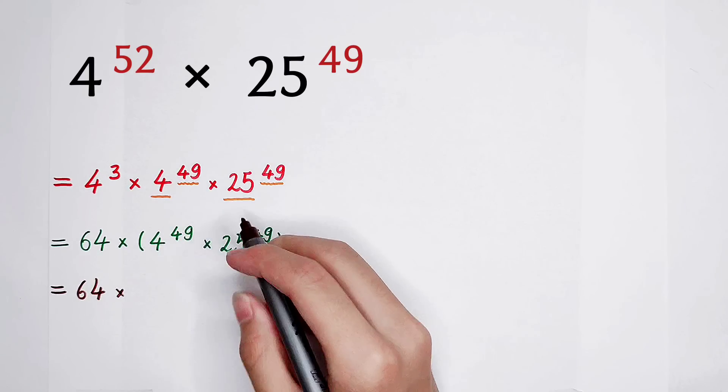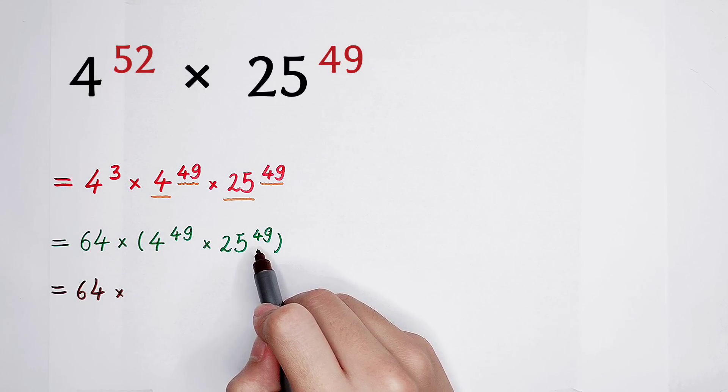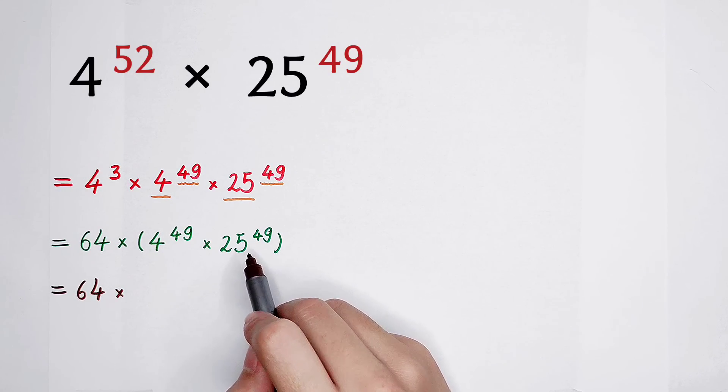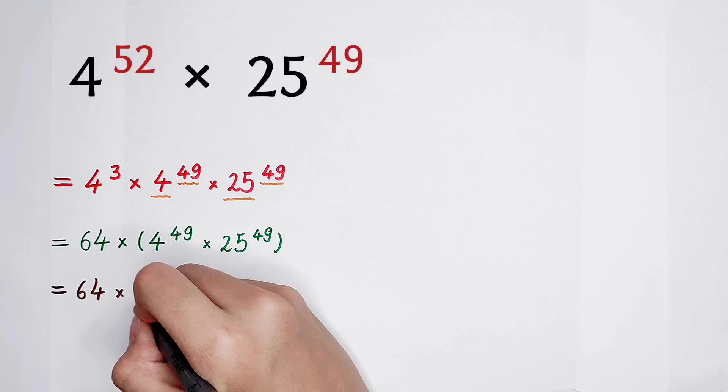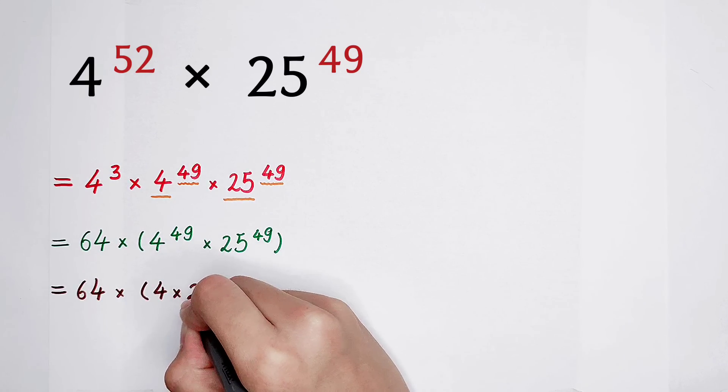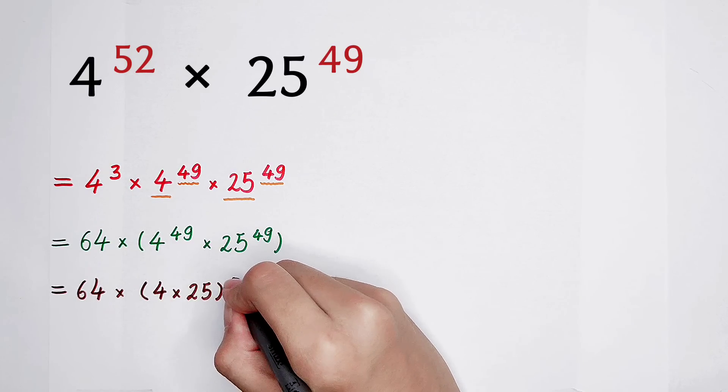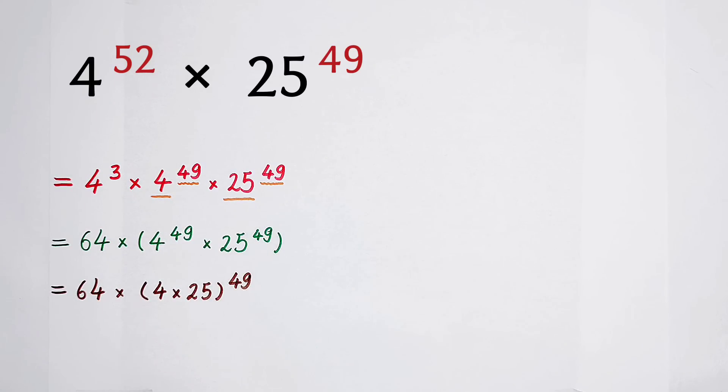64, and then times, they have the same exponents and they have different bases. So, get the multiplication of the bases, and also power the same exponent.